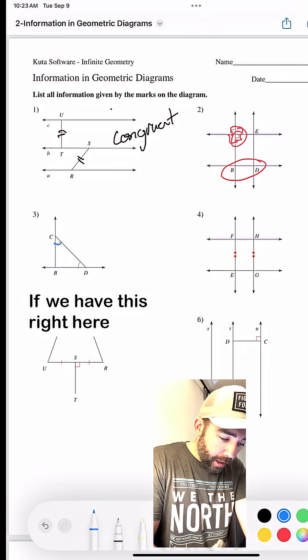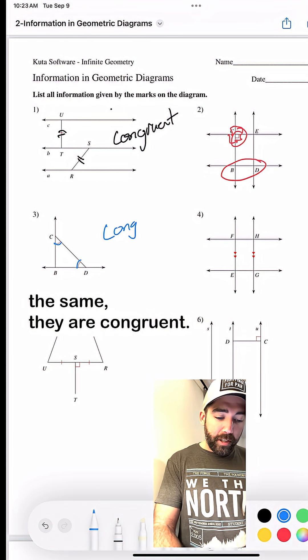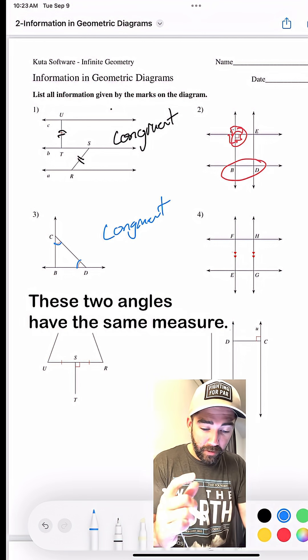Here it is, number three. If we have this right here, that is saying that these angles are the same. They are congruent. Okay, they have the same measure. These two angles have the same measure.